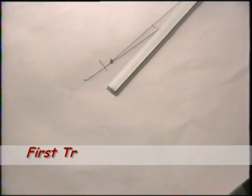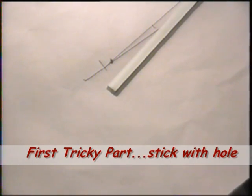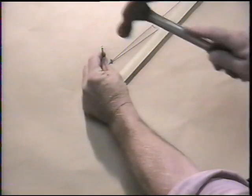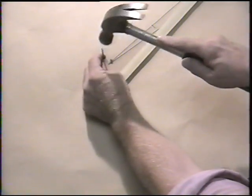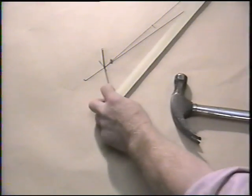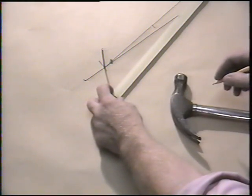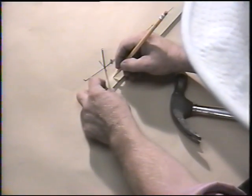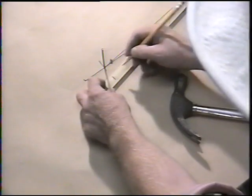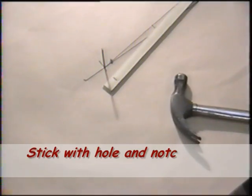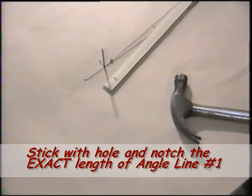Give this line a name - call it angle line number one. Now comes the tricky part: from the first point on the master line right here, you're going to make a stick with a hole and a notch to the last point at the end of the line.